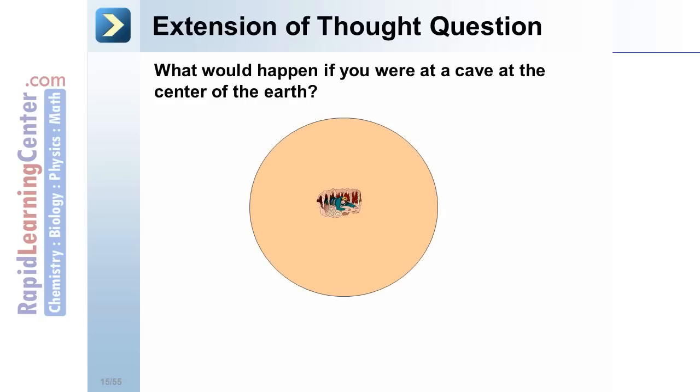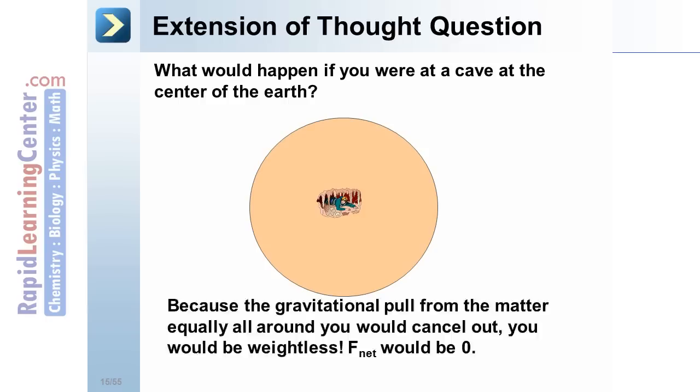Extension of Thought Question. What would happen if you were at a cave directly at the center of the Earth? Once again, consider the mass and the distances. Extend the explanation from before, and at the center you would have no weight at all. The Earth would pull equally on you from all different directions, thus the net force on you would be zero.